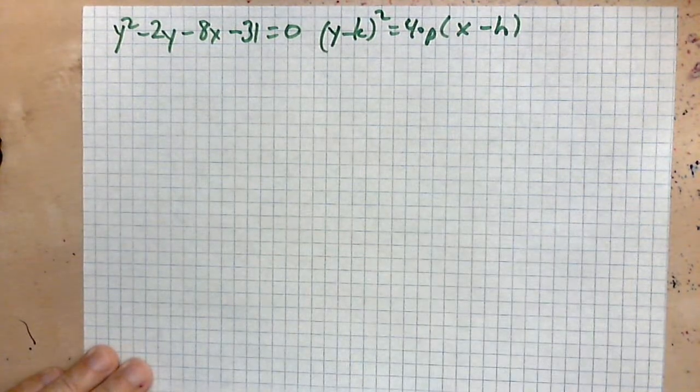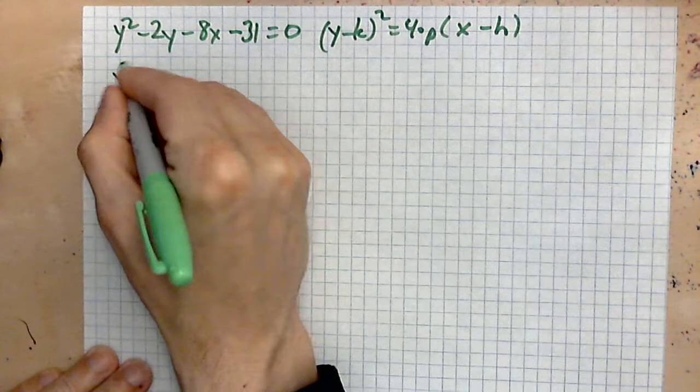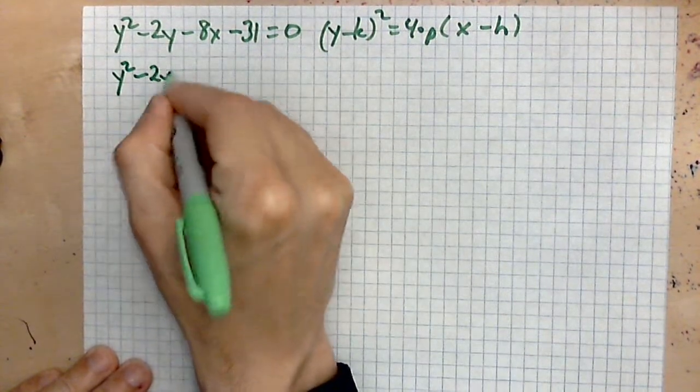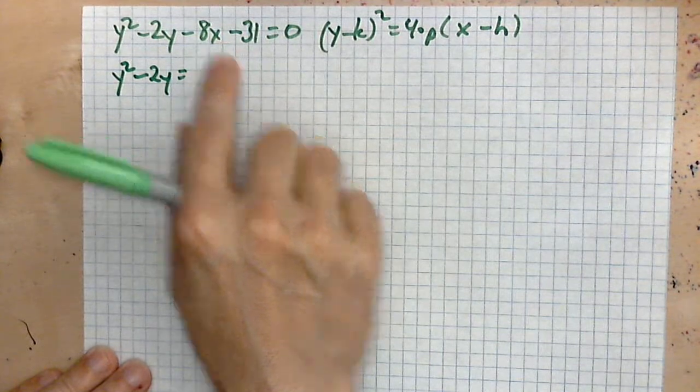Where do we begin? You can write y squared minus 2y, take the negative 8x and move it to the right side, take the negative 31 and move that to the right side. You've got 8x plus 31 on the left side.